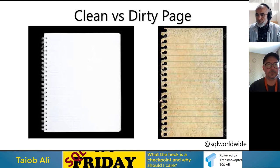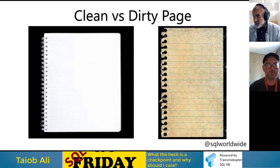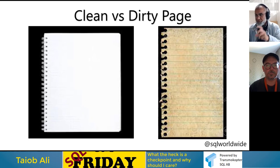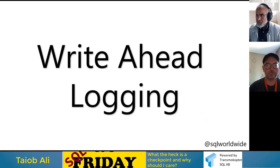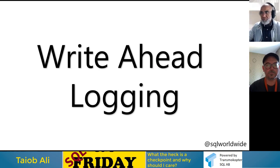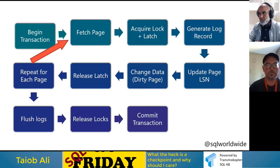To track this, there's a DMV called sys.dm_os_buffer_descriptors which tracks every page in the buffer pool. You can group by database or object and it will tell you how many pages are dirty and how many are clean. We'll use this in the demo.